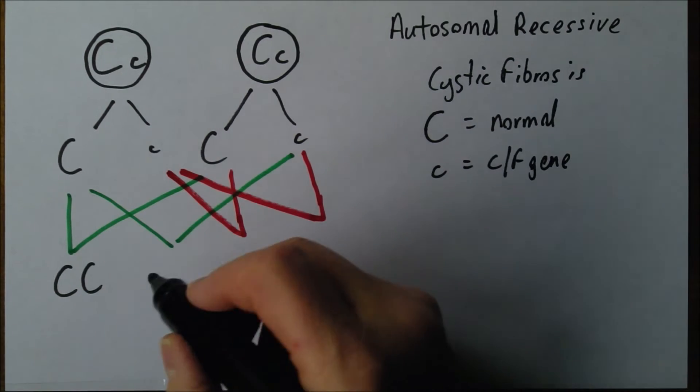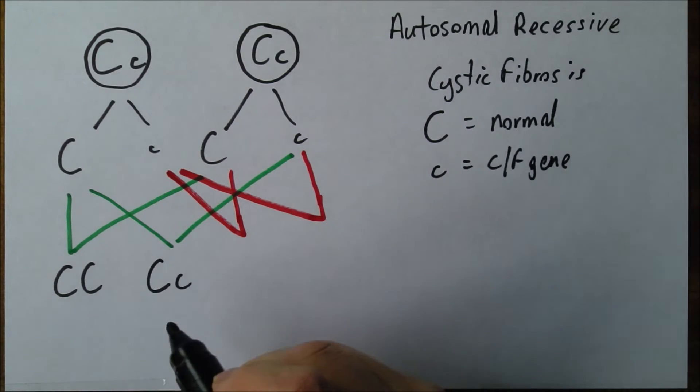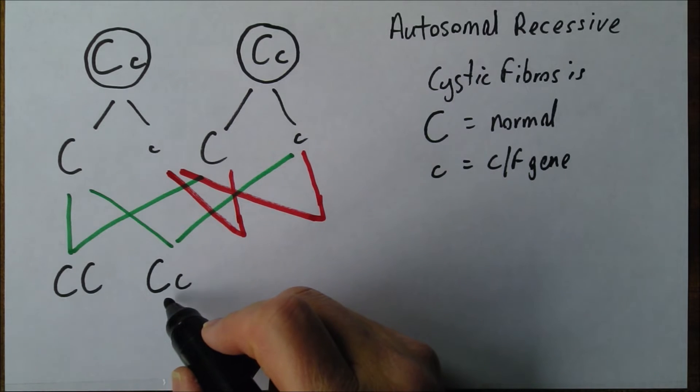Alternatively, this big C combined with that small c gives us a child who is genotypically heterozygous. Fortunately they won't suffer from the disease because they have a copy of the normal dominant gene, but they could potentially carry it to the next generation.